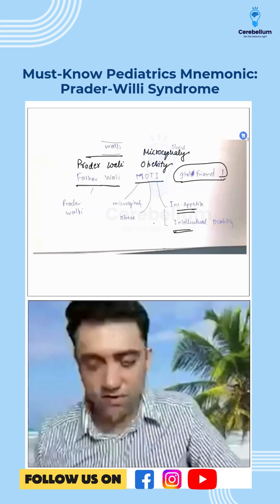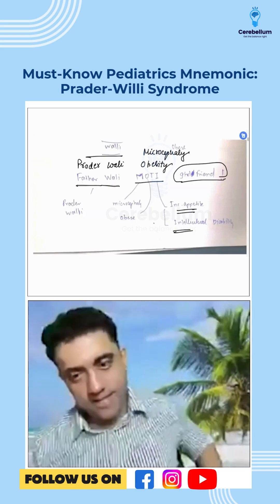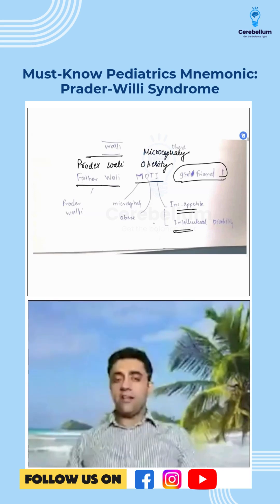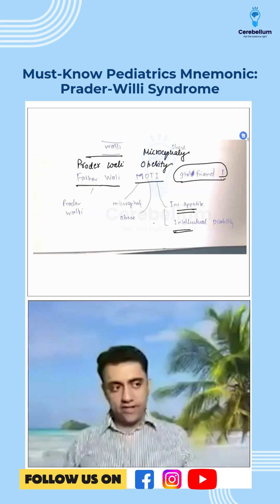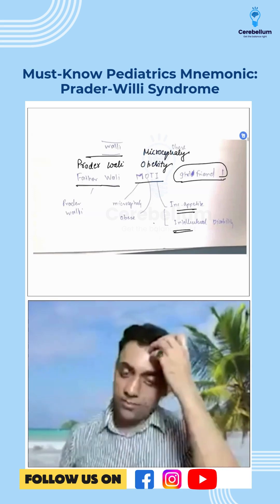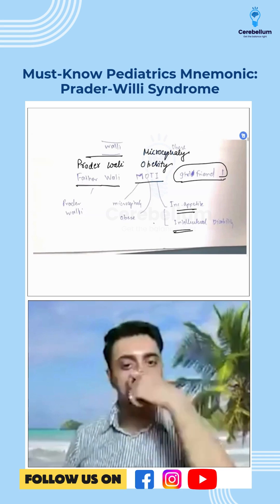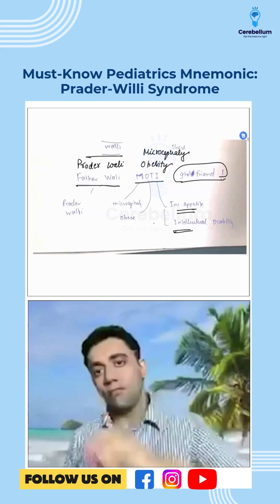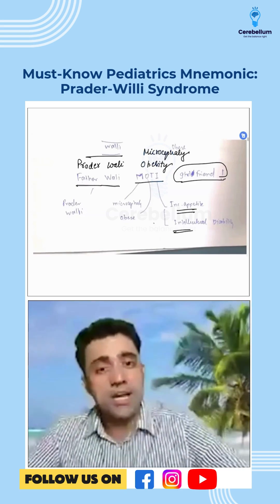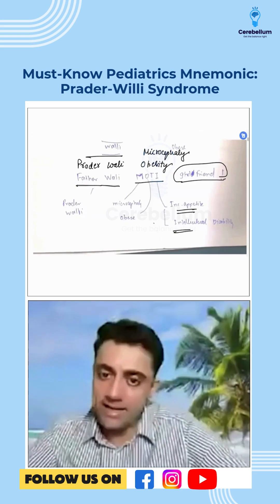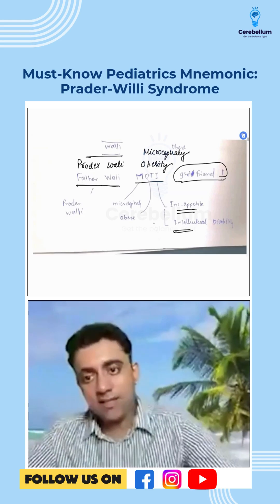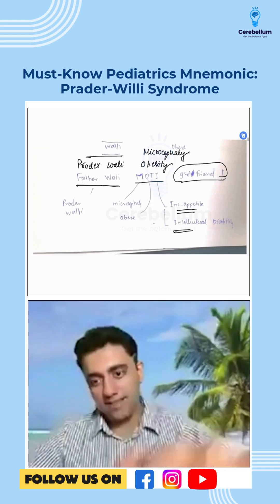'Girlfriend' is just a random addition to complete the mnemonic. So 'Father Wali Moti Girlfriend' is the mnemonic for Prader-Willi syndrome. To recap, MOTI stands for M — microcephaly, O — obesity, I — intellectual disability, and increased appetite. These are the important points.